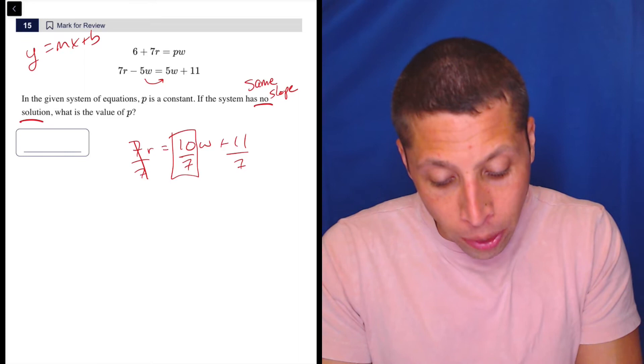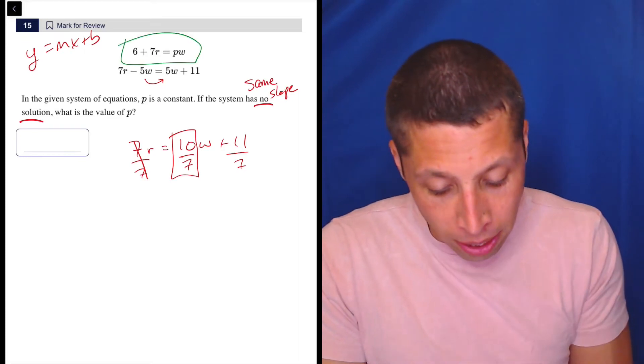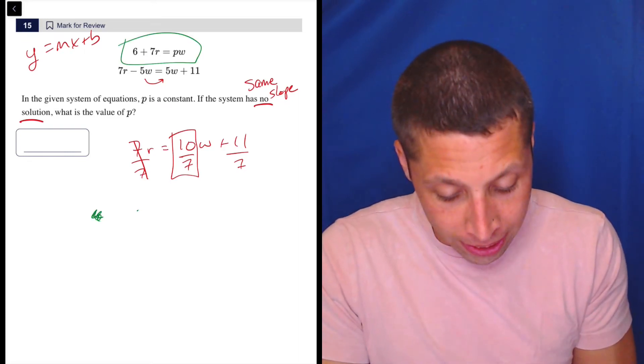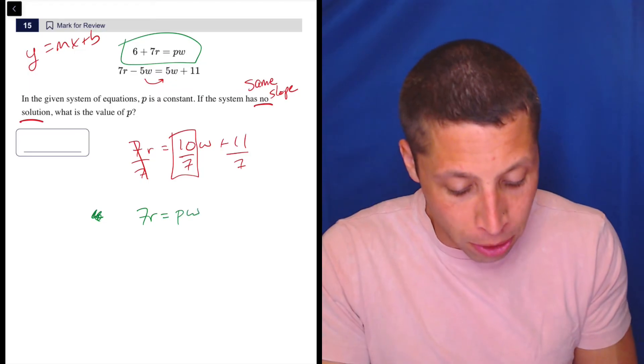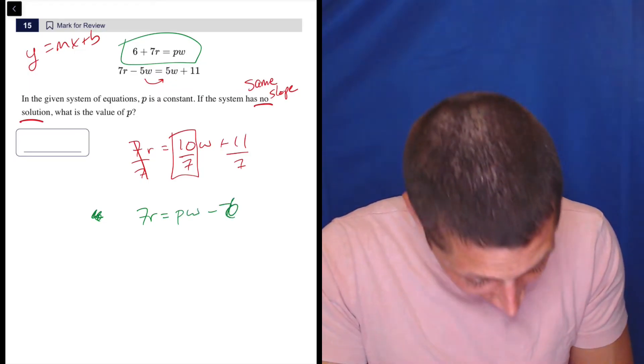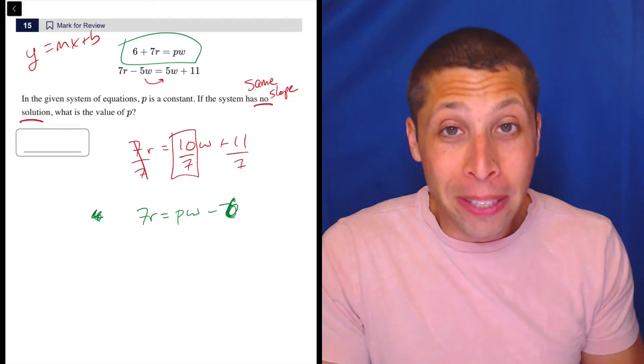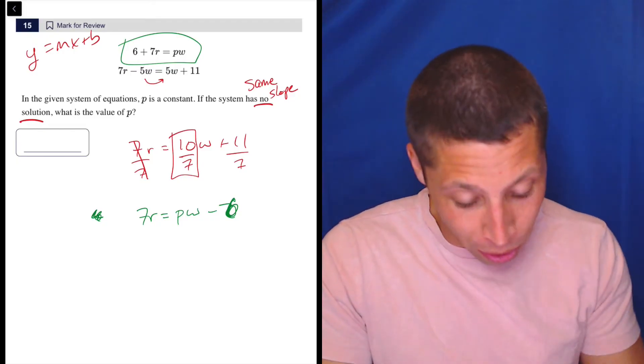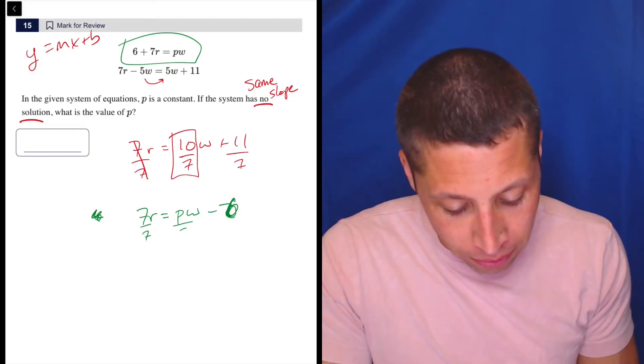Now I can manipulate this top equation. Let's bring it down here. So 6 plus 7R equals PW minus 6. I don't even care about that part because it's the Y intercept, there's nothing to do with the slope. Now I divide by seven.